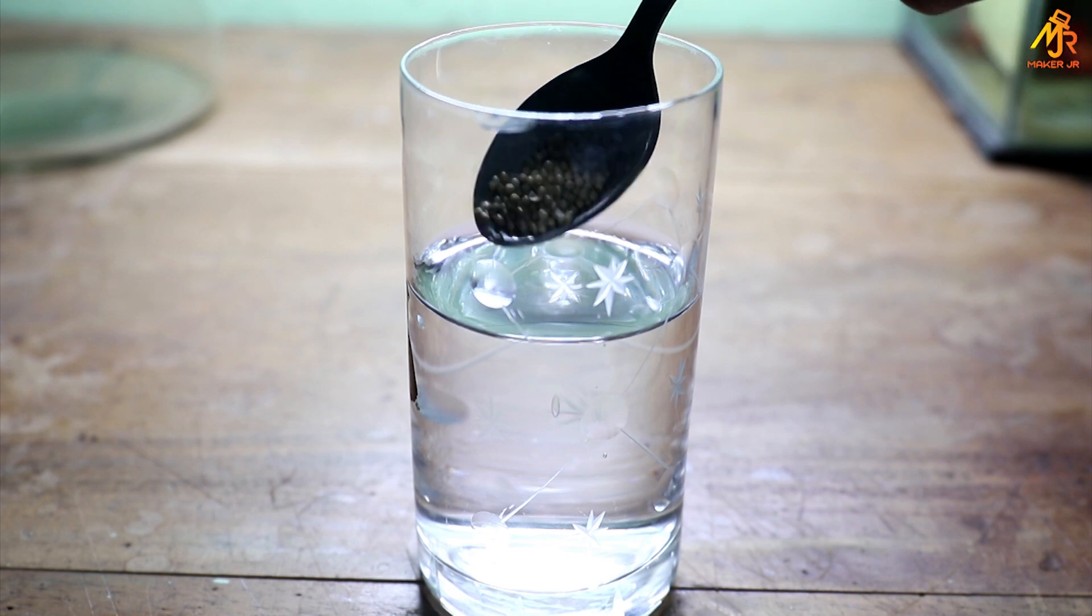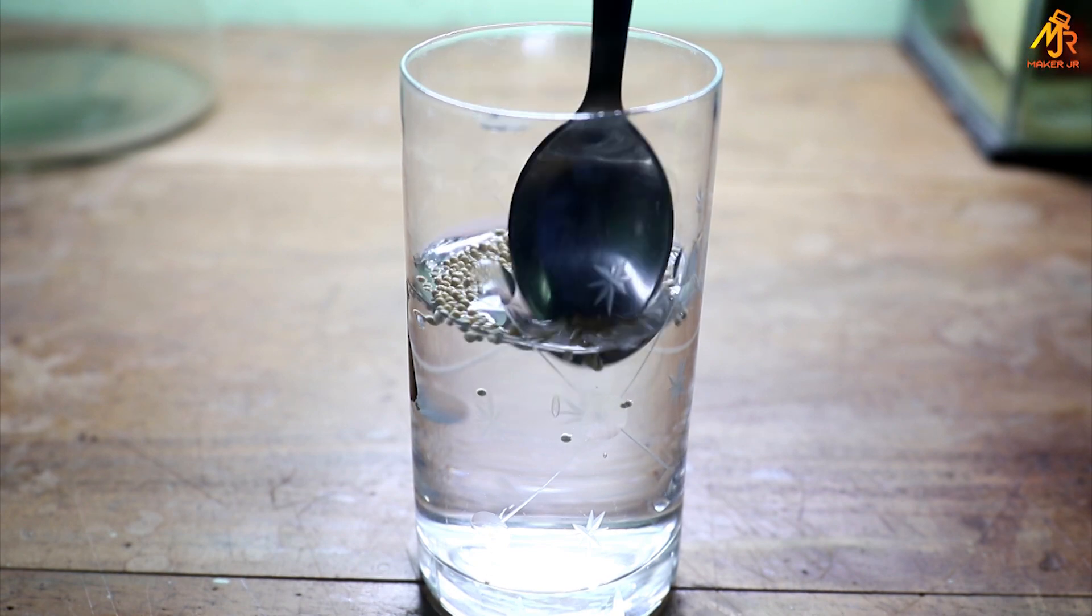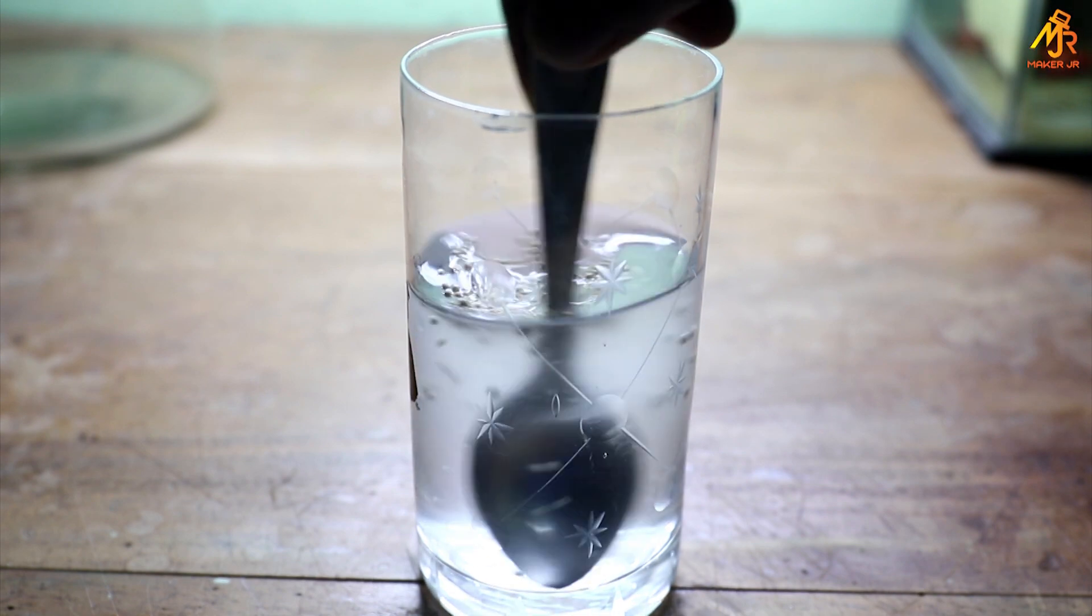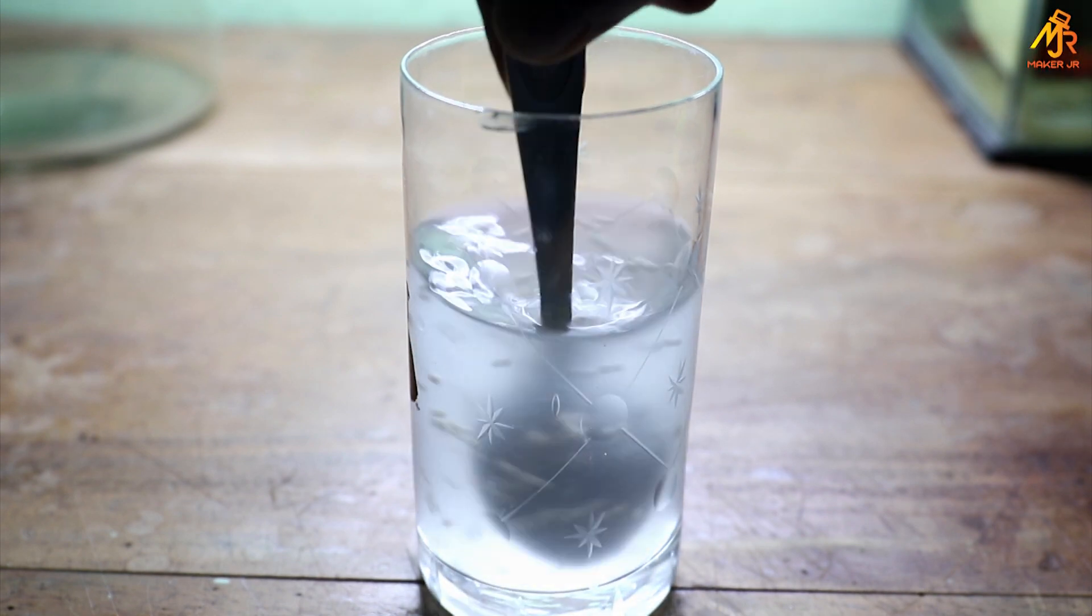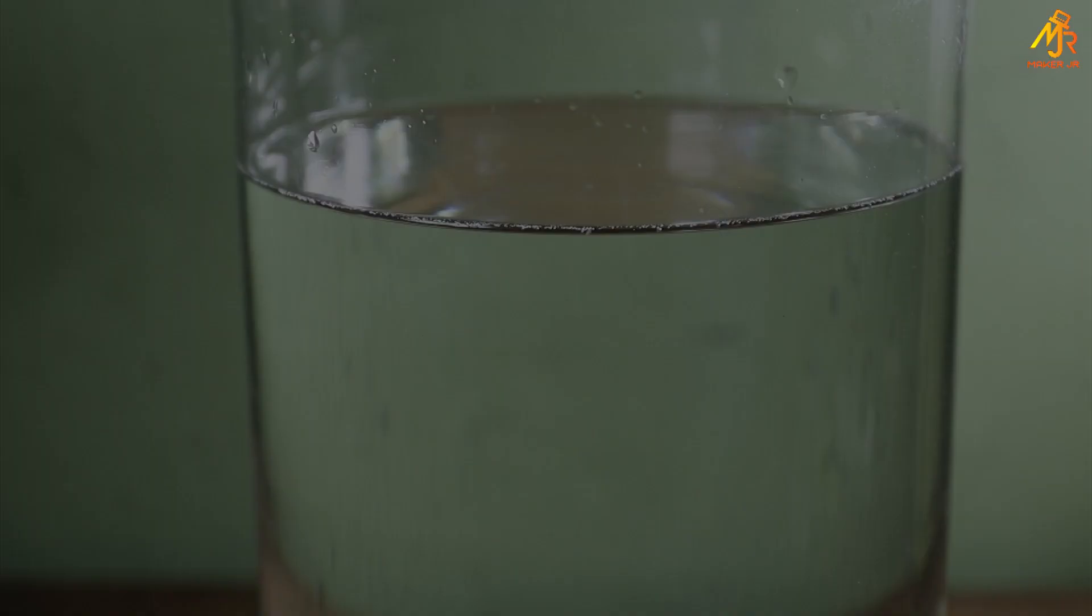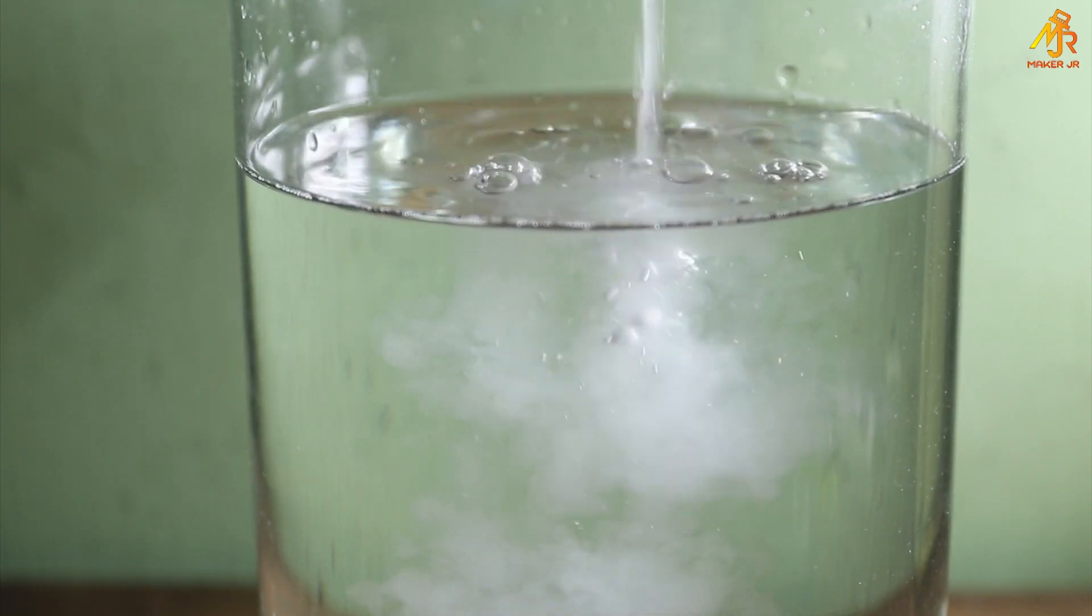The first step is to disperse some yeast in water. It's best to use warm water as it can activate the yeast and boost its multiplication. The quantity of the yeast used depends on the size of the container and the density of the Moina in the culture. Now pour this mixture into the container and mix it well.